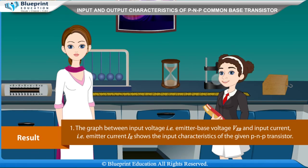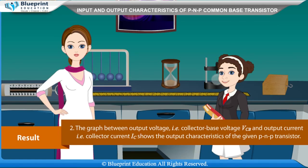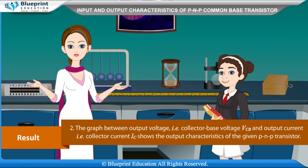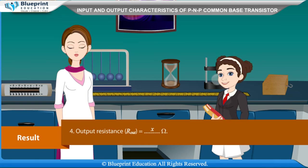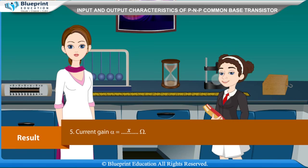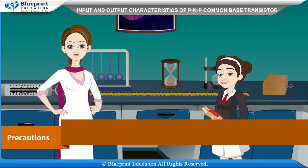Result: The graph between emitter-base voltage VEB and emitter current IE shows the input characteristics of the given PNP transistor. The graph between collector-base voltage VCB and collector current IC shows the output characteristics. Input resistance R_in = X ohm, output resistance R_out = X ohm, current gain alpha = X, voltage gain AV = X.